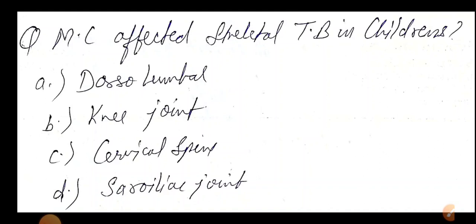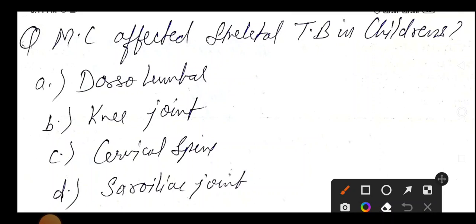Most common affected skeletal TB in children. So guys, option is dorsal lumbar, knee joint, cervical spine or sacroiliac joint.